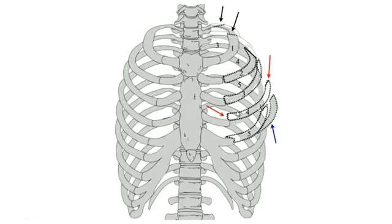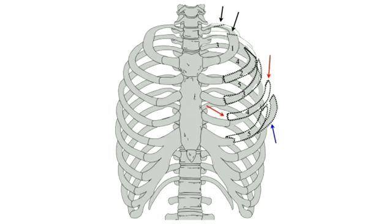Number four here represents a rib that has been fractured in two places. Contiguous ribs that are similarly associated can result in what is known as a flail segment, which can markedly reduce the ability to ventilate that lung. Many times these patients need to be intubated, and sometimes they require operative fixation of the flail segment.